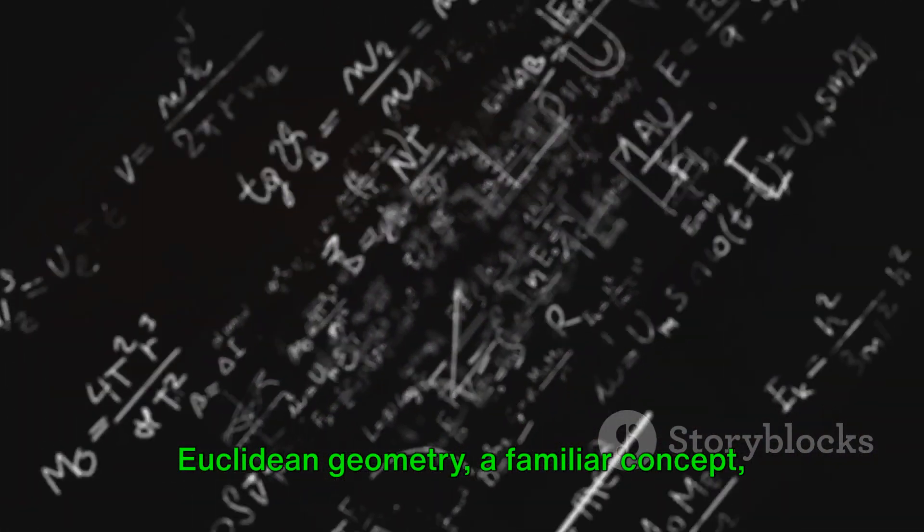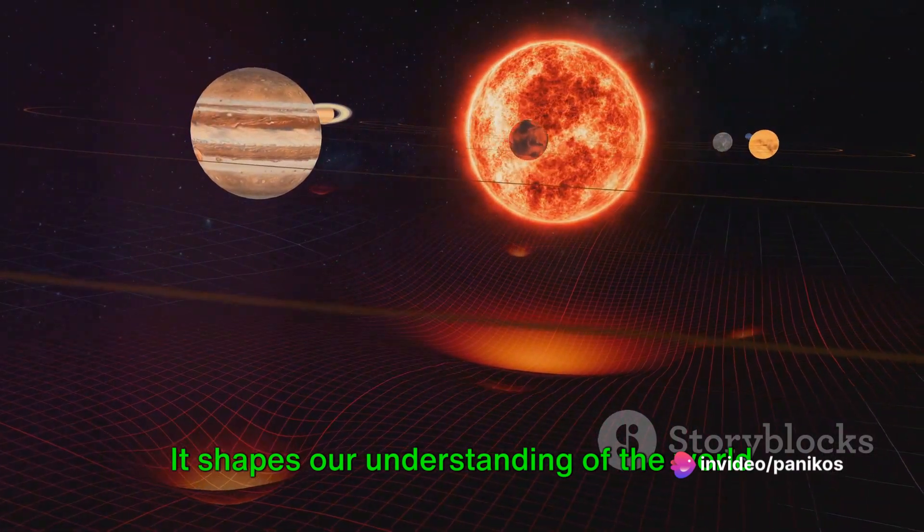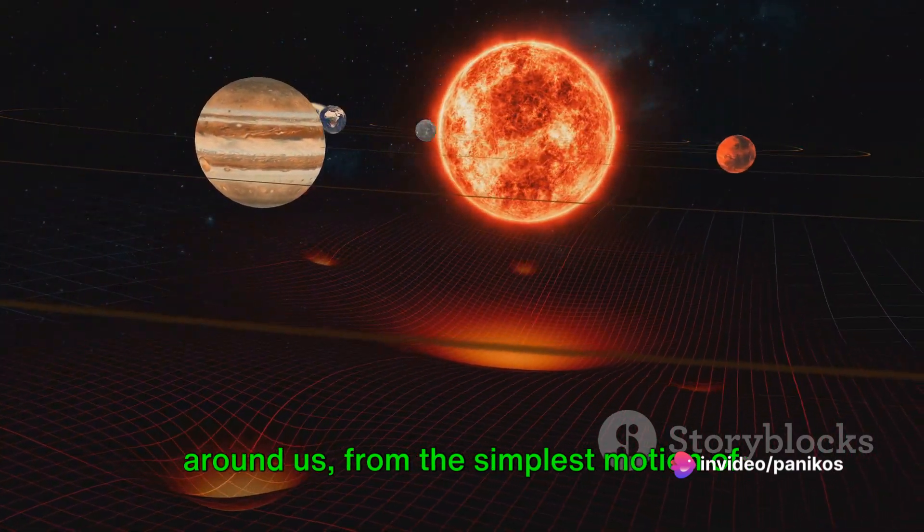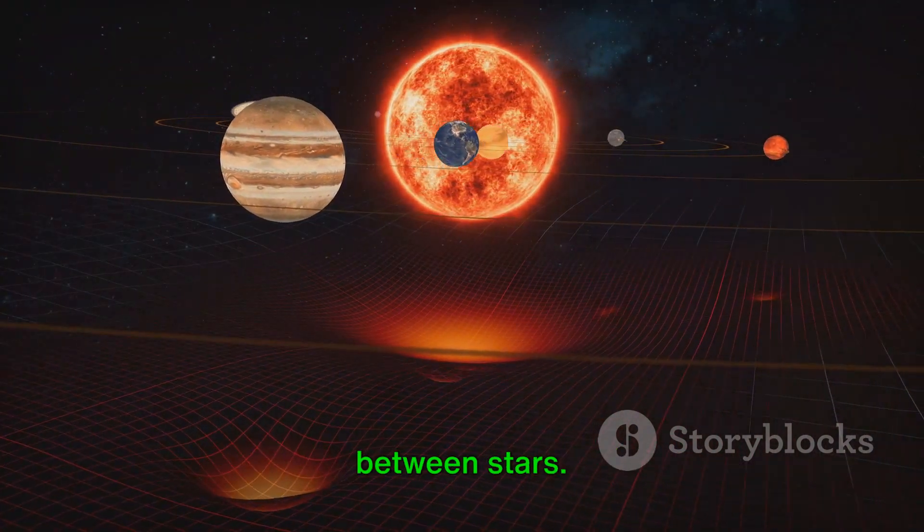Euclidean geometry, a familiar concept, is a three-dimensional space. It shapes our understanding of the world around us, from the simplest motion of objects on Earth to the vast distances between stars.